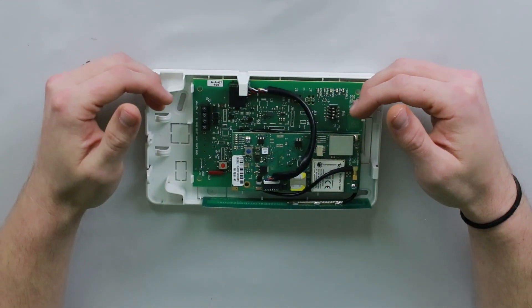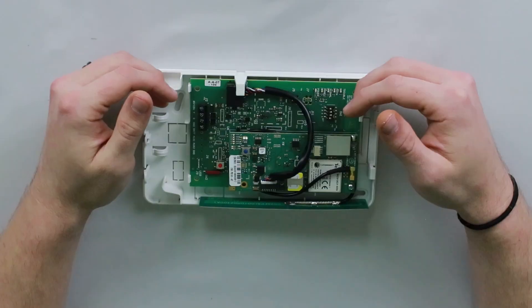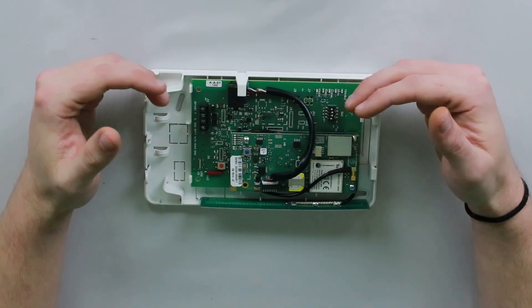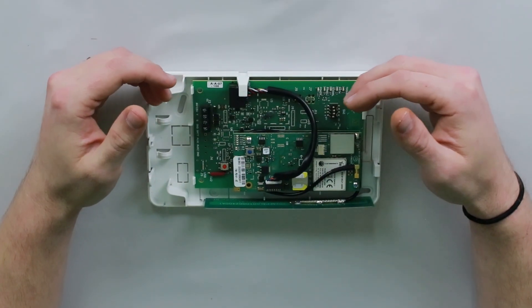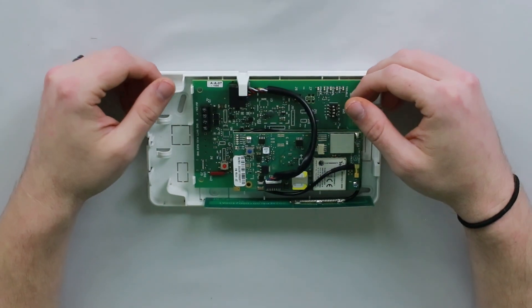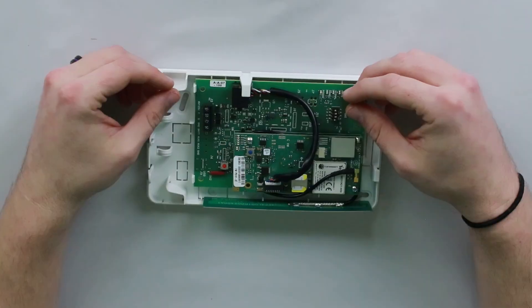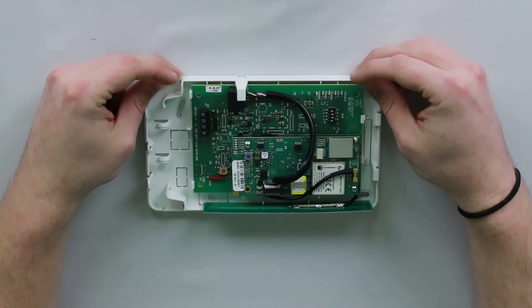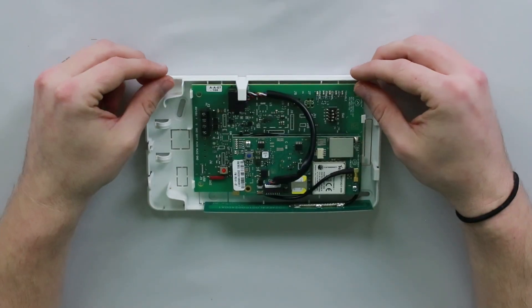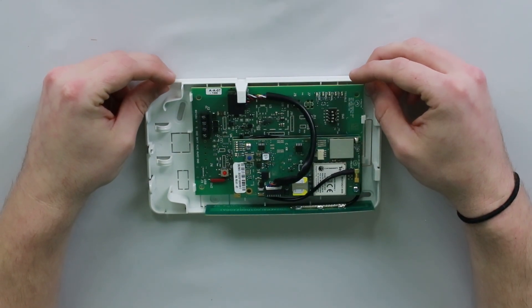So whenever that happens, the main thing is making sure that your system can communicate again. Diagnose whatever issues you can physically from your side, make sure that everything seems okay, and then once you've done that, test with Central Station until you get a good signal, and that way, you know you're covered again. So that's where I'm going to cut it off. Hope this was informative, and at least points you guys that are having this issue in the right direction, and I will catch you guys on the next one.